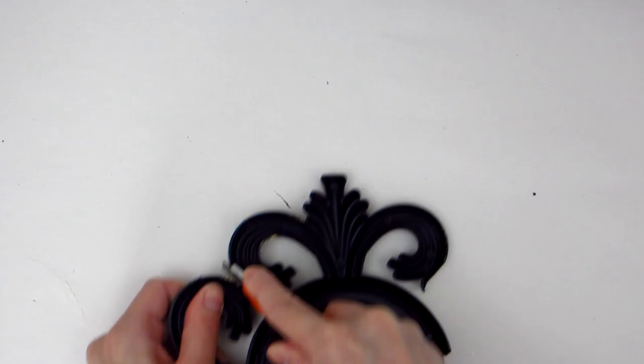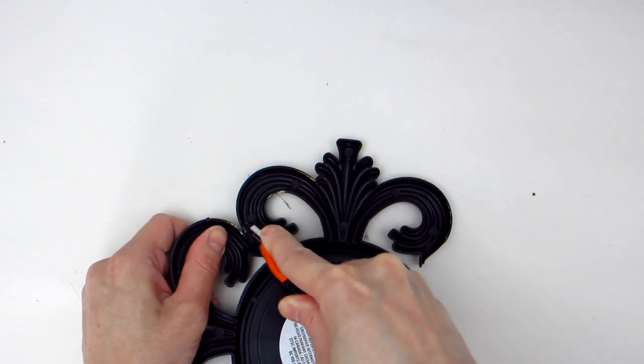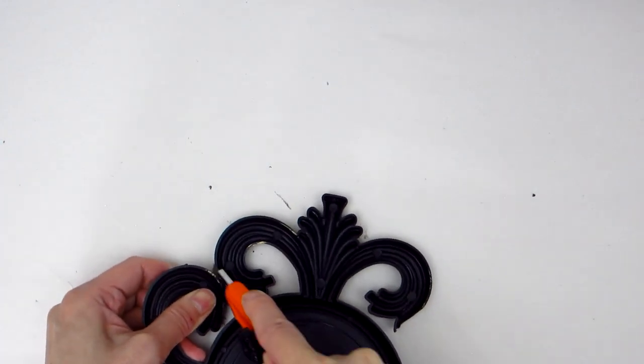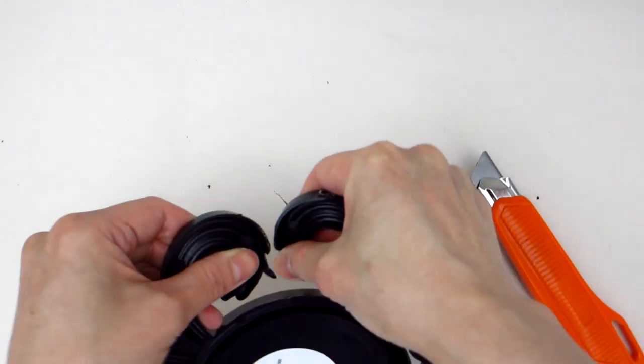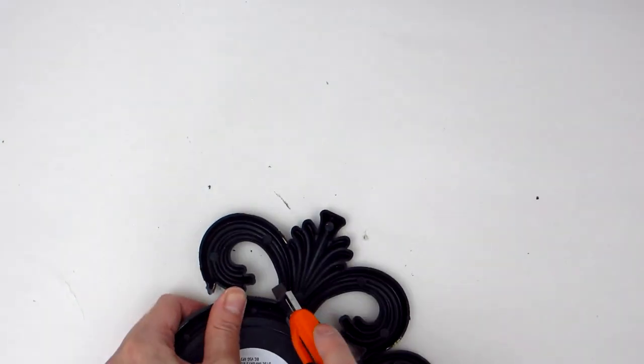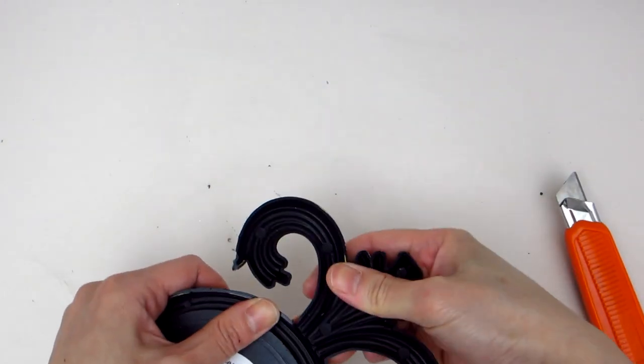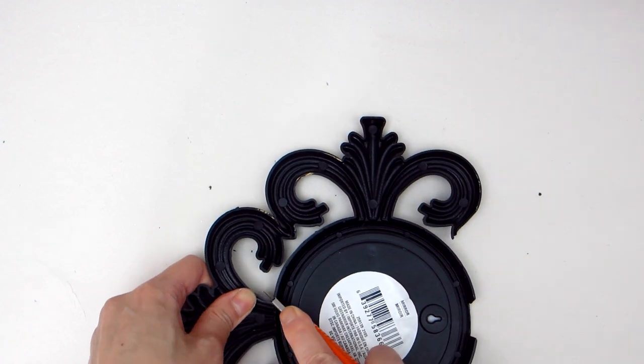Here you can see I am using an X-Acto knife to help detach the frame pieces. Once enough of the frame is cut, you can use your hands to gently snap off each frame piece. Be careful with this step. You may also want to use some safety goggles to protect your eyes in case some of the pieces end up flying off.